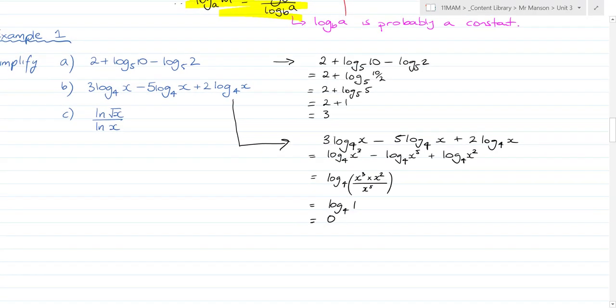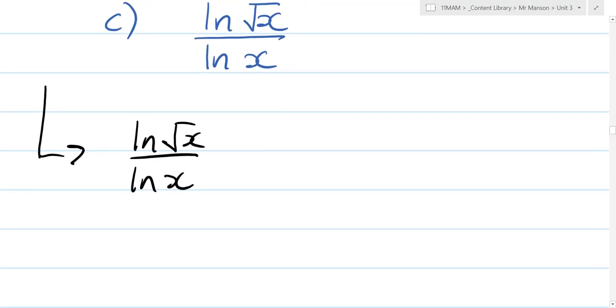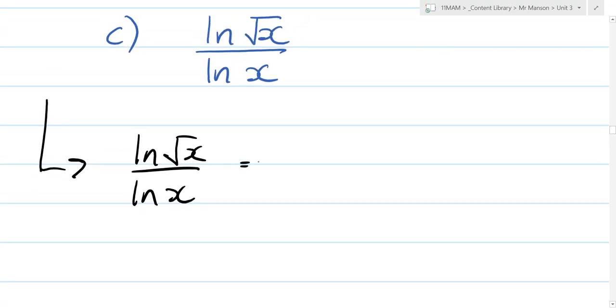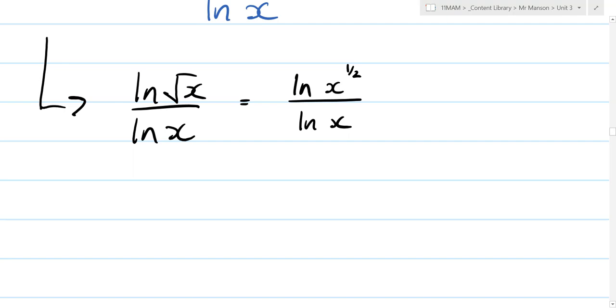And in question c, natural log of root x over the natural log of x. Any ideas how we might set this one out? Let's write this down as log of x to the power of a half over log of x. Remember, don't be fooled, some people might look at this and go, oh that's right, if you divide logs you subtract. But that's the opposite way around.